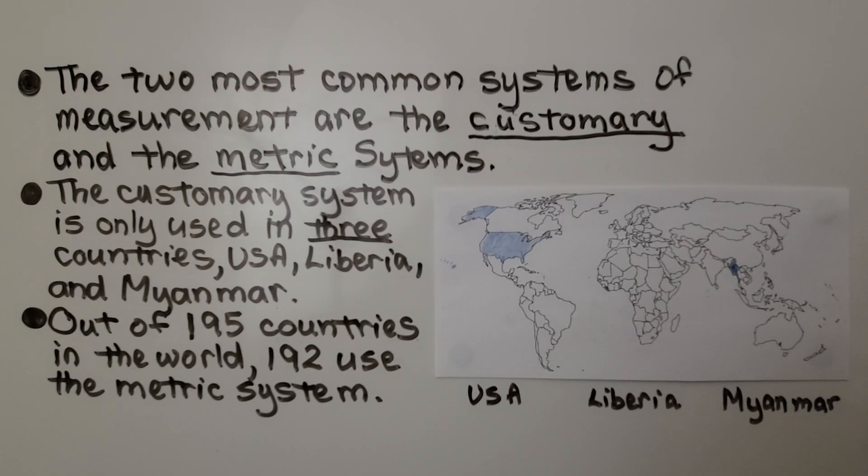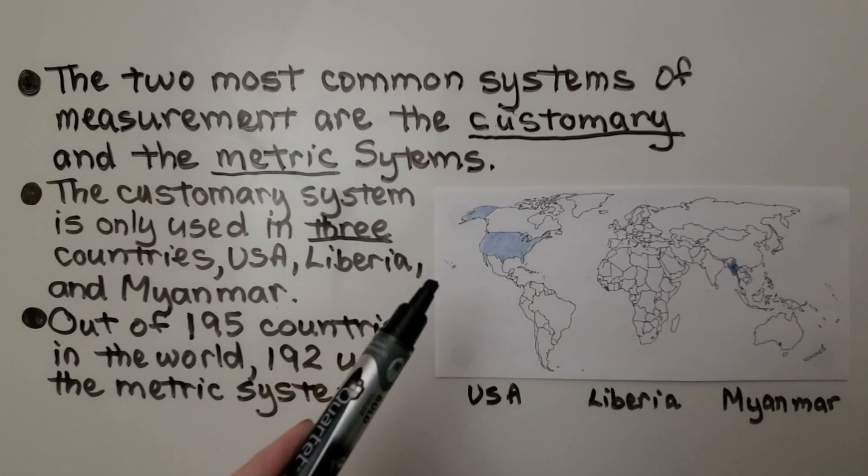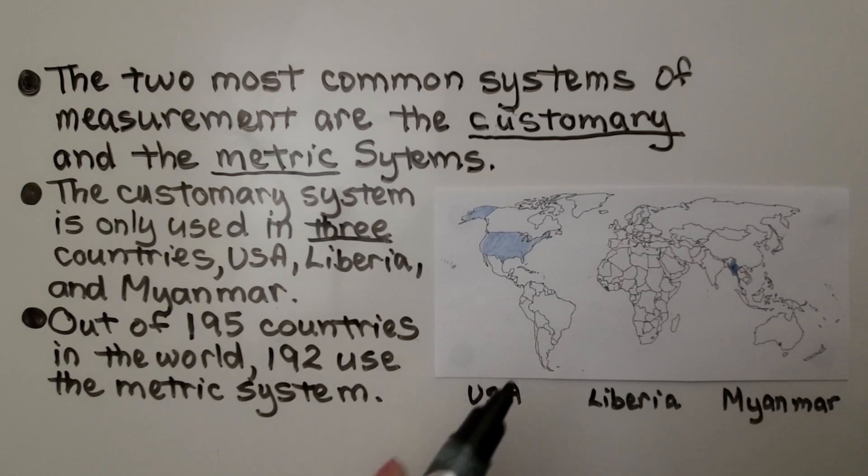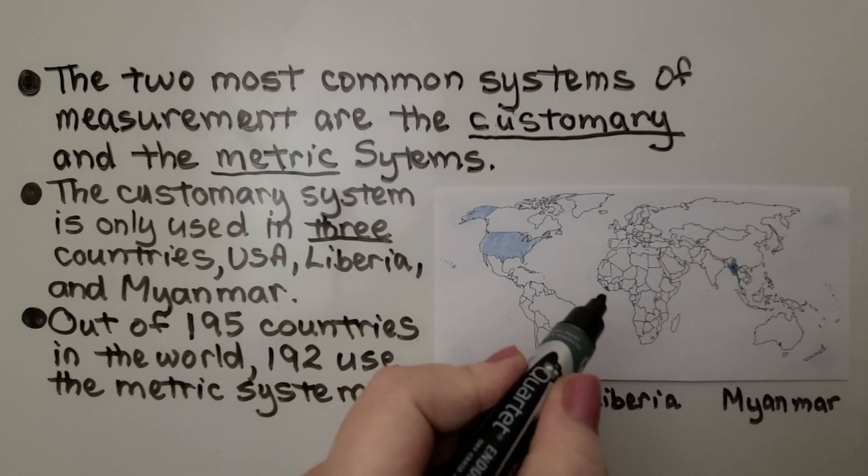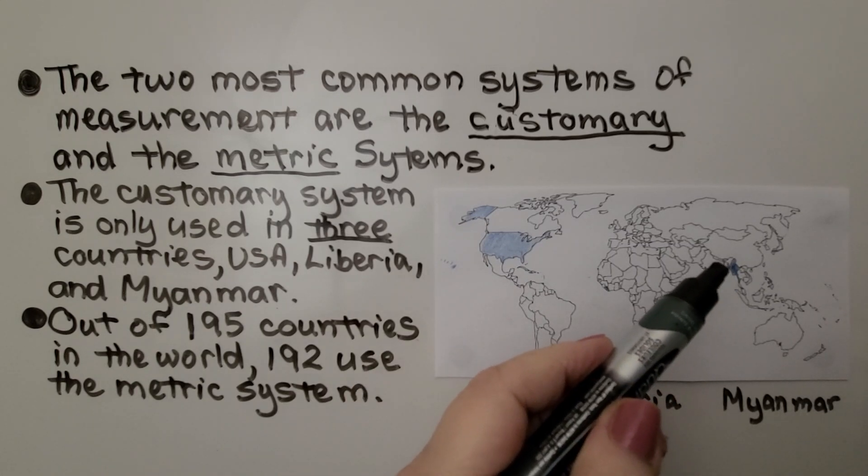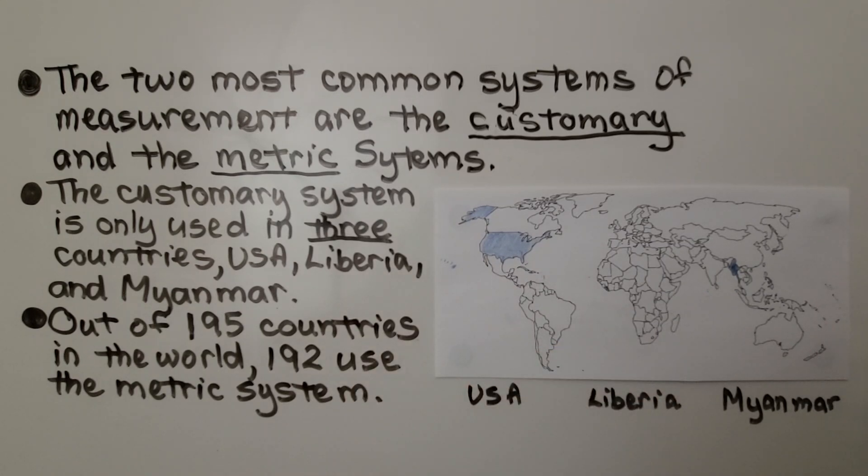So the USA, and that includes Alaska and Hawaii, here's Liberia, this tiny little country right here, and Myanmar, which was formerly known as Burma. Those are the only three countries that use the customary system.